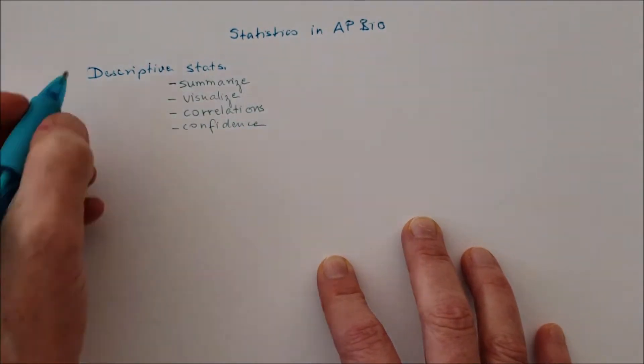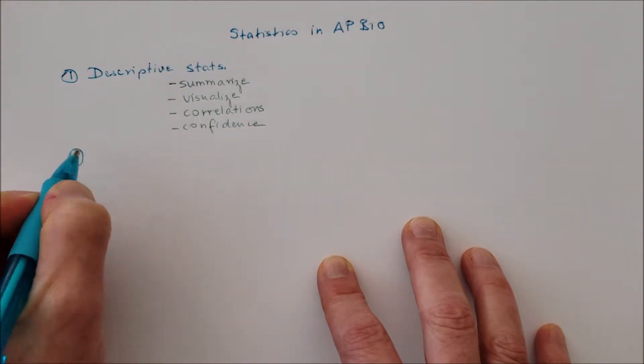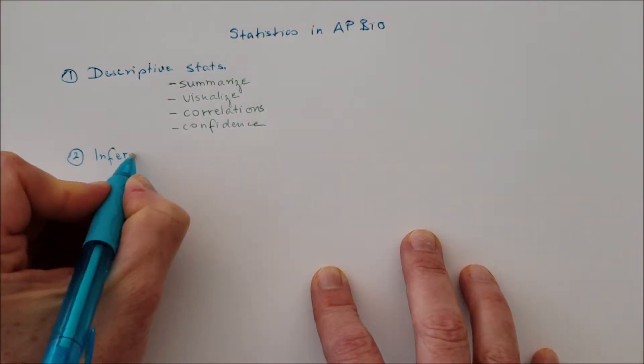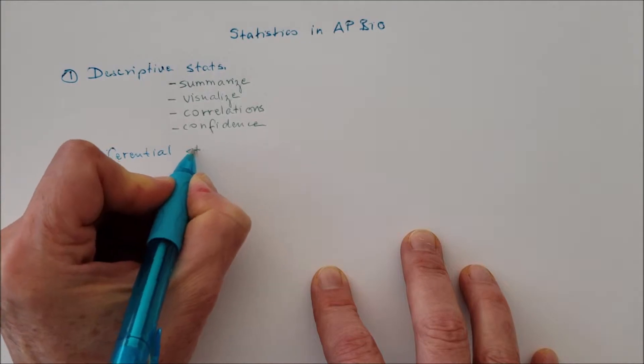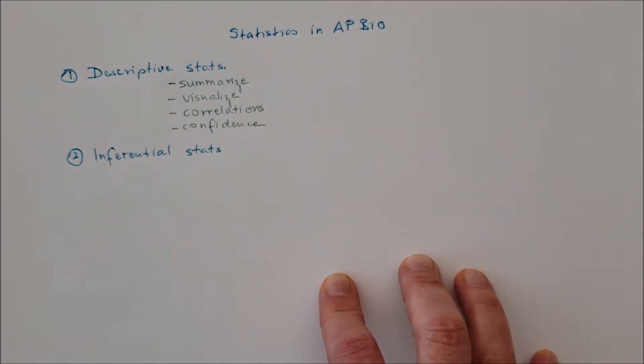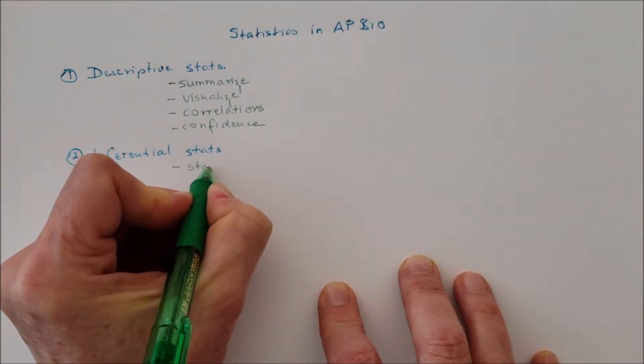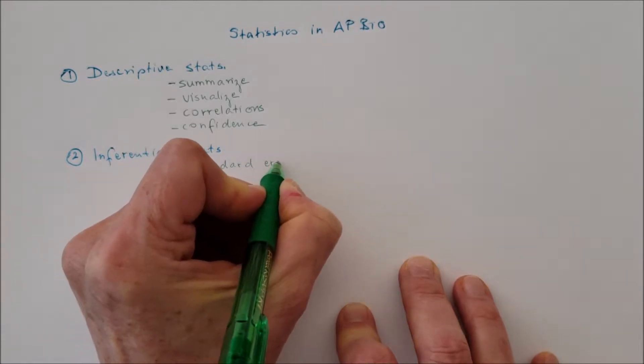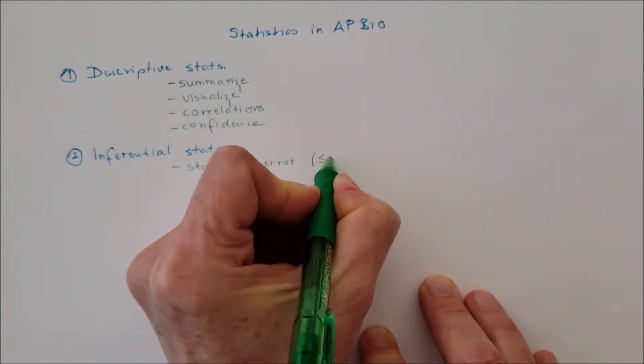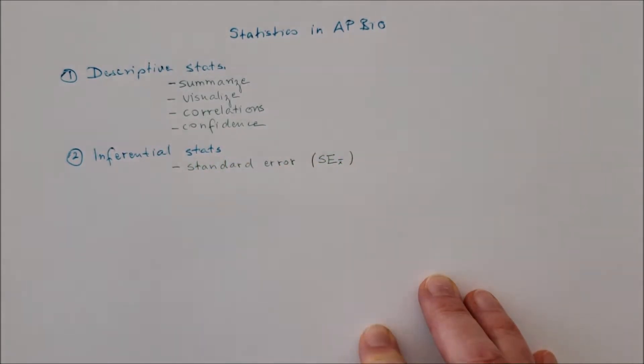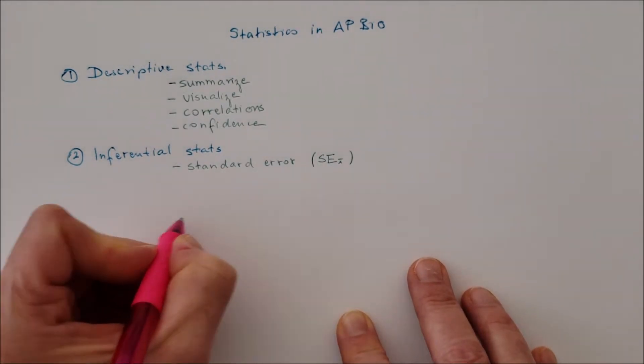The other branch of statistics beside the descriptive statistics is the inferential statistics. It is all about using data from a sample and make inference about the population. We will use the standard error for inferential statistics.